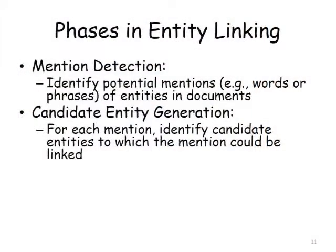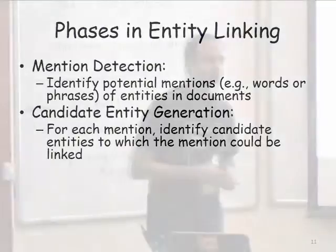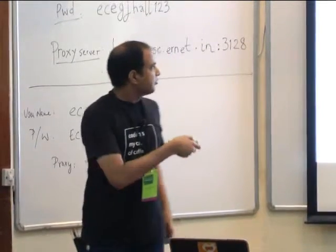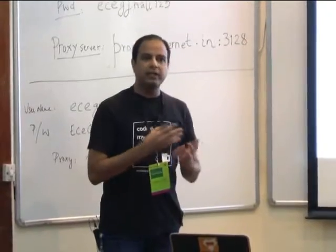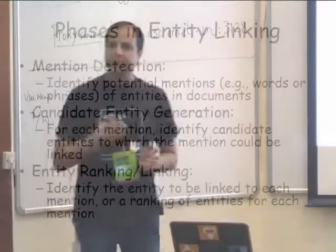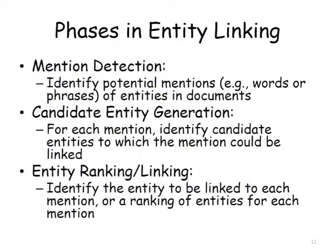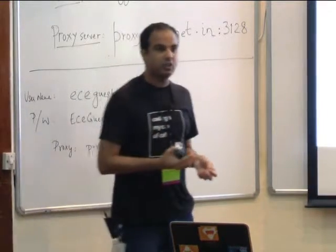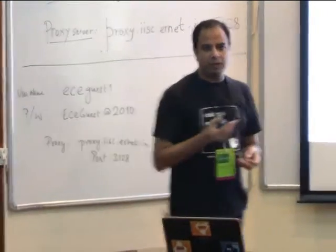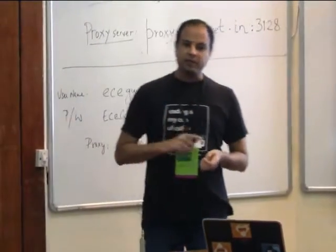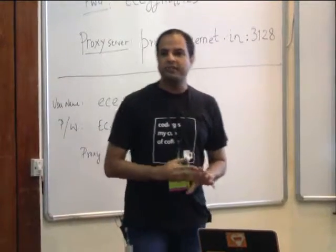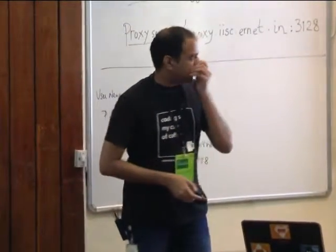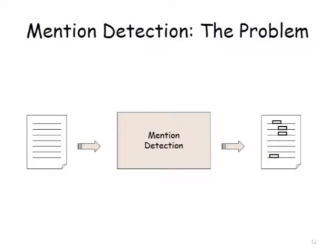For candidate generation: given a mention like 'apple,' there are two obvious choices — the company or the fruit. For each mention, identify candidate entities to which the mention could be linked. The third phase is entity ranking: you have the candidates and want to select the top one. If the context is talking about Facebook and Apple doing something together, you need to link it to the Apple company, not the apple fruit. Depending on context, figure out which is the best ranking candidate.